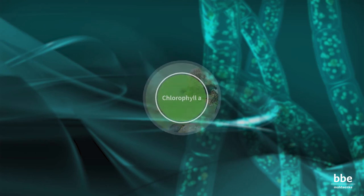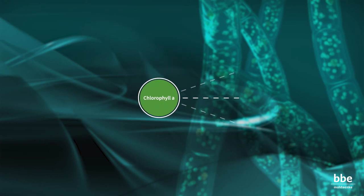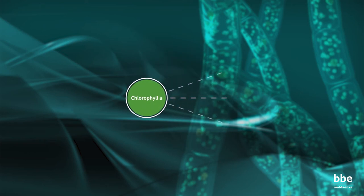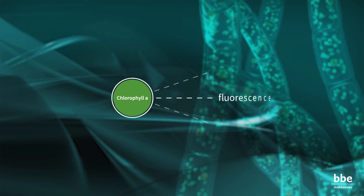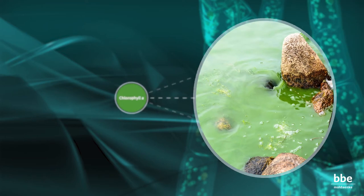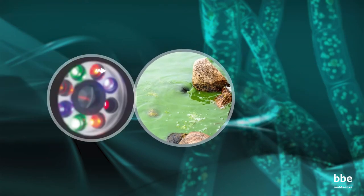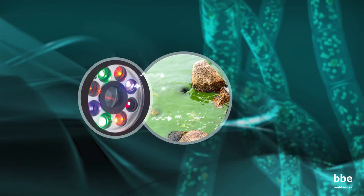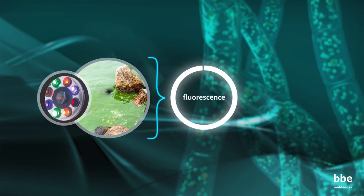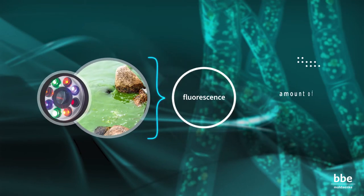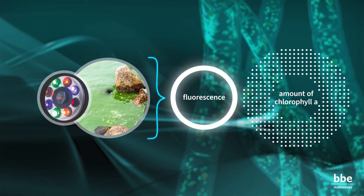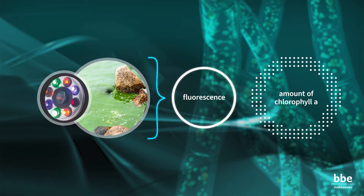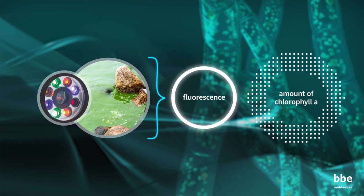A small part of the absorbed energy is emitted by the main photosynthetic pigment, chlorophyll A, as fluorescence. If the algae are illuminated by artificial light from LEDs, then the intensity of the fluorescence will be related to the amount of chlorophyll A inside the cells.